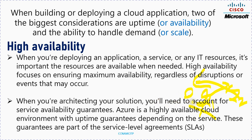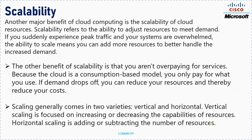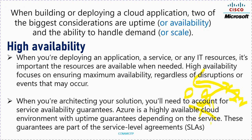When architecting a solution, you need to account for service availability guarantees. A high-availability cloud environment comes with an uptime guarantee depending on the service. Providers guarantee at least five nines — 99.999% uptime — and these guarantees are part of the Service Level Agreement (SLA) that they sign with you, committing to maintain that infrastructure at their end.